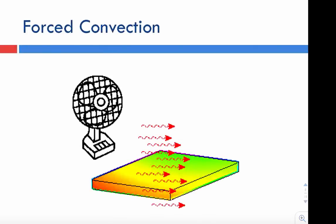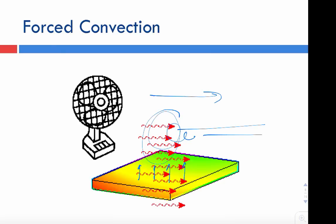In forced convection, we don't wait for hot air molecules to rise naturally. Instead, a fan forces airflow in an established direction. The air molecules moving from left to right will pick up energy from a hot surface and carry that heat away. This is a great way of cooling a hot object, and it is very commonly used in many applications — including water cooling and air cooling in electronic cooling.